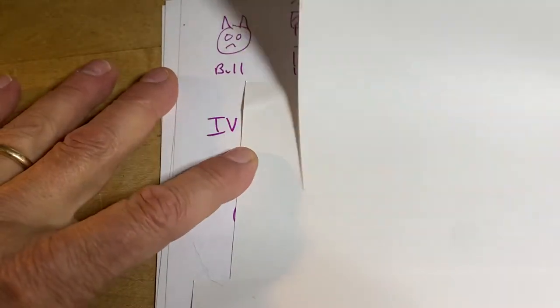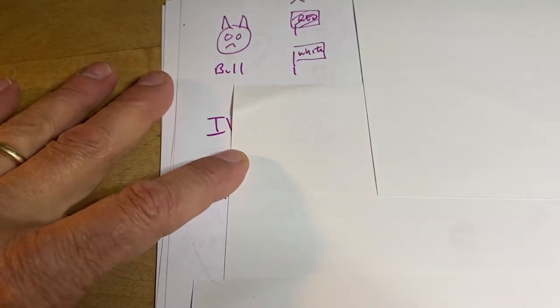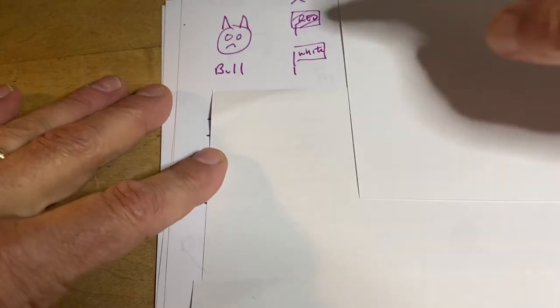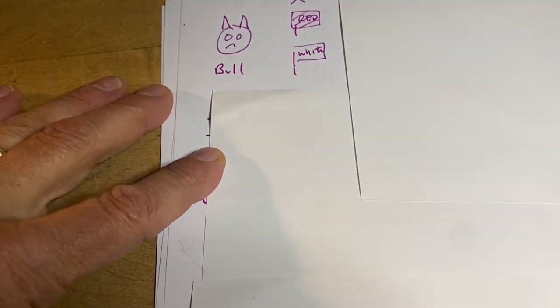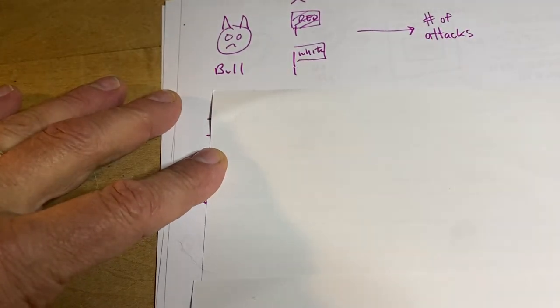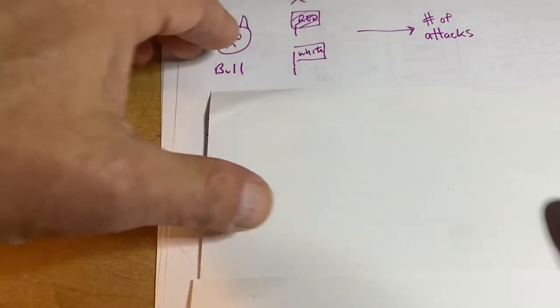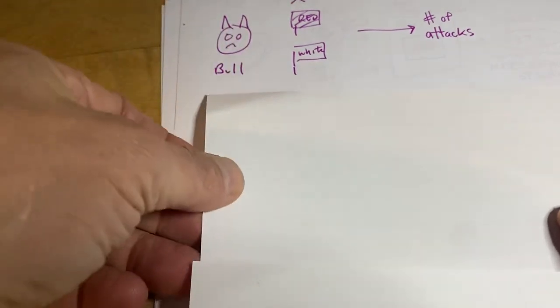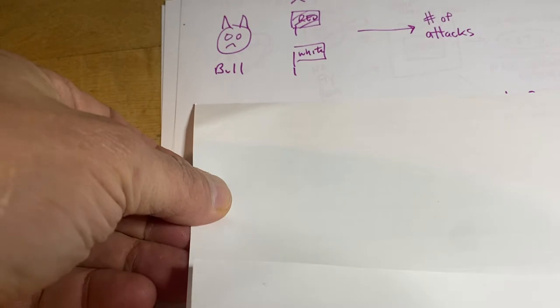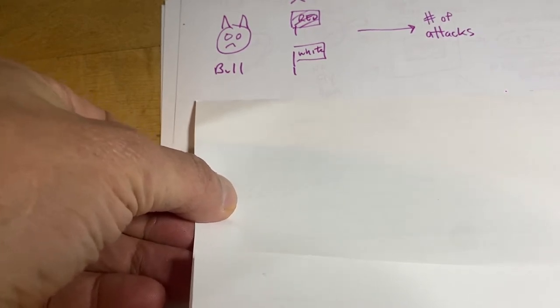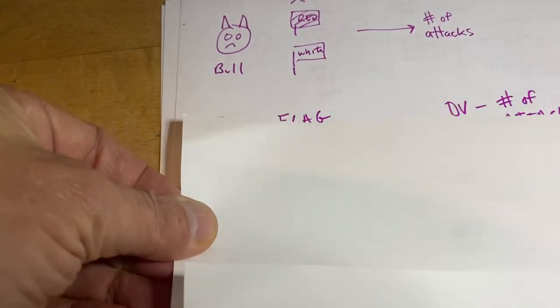So in this experiment, a matador is testing the hypothesis of whether flags make a difference for how many times a bull will attack it. It's a pretty clear experiment, I think one of the easier ones to look at. You can see that basically what the matador does is change the flag.